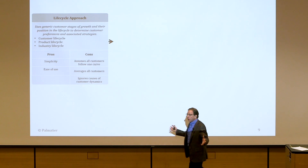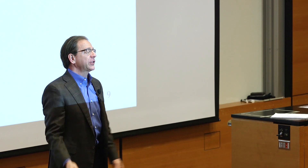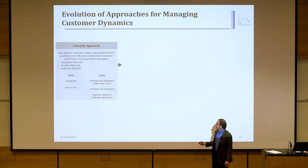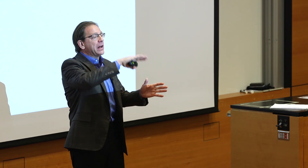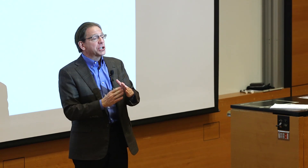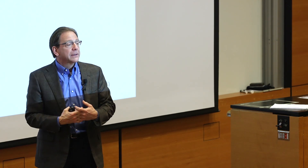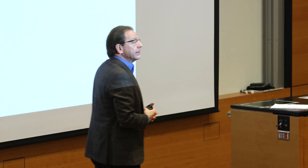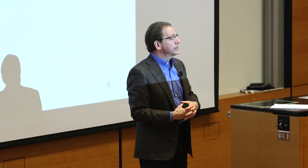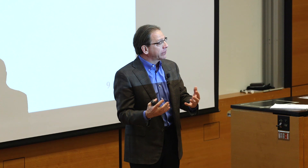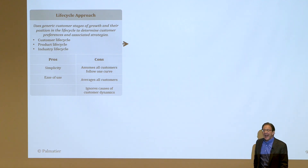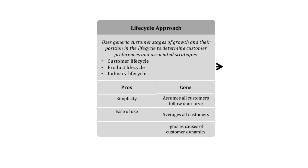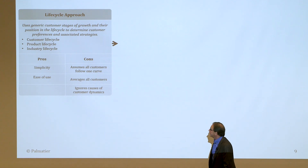The lifecycle approach took all five sources of change and dropped them into one curve, saying customers go through a lifecycle. They do sometimes break it out at the customer, product, and industry level. But it averages all customers in your database to say they all follow the same path. That doesn't happen — customers are different and they change. If you have 100,000 customers with an average age of 25, do they all have children at the same age? No. So you can't just average everybody together. The advantage is it's very simple and easy to understand. The disadvantage is it assumes all customers follow one curve, averages all customers, and ignores the causes — which are important because they allow you to understand change before it happens.